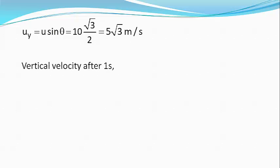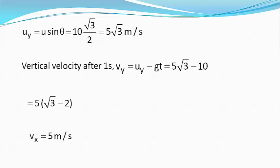The vertical velocity of the particle after 1 second, v_y equals u_y minus g t which equals 5 root 3 minus 10 equals 5(root 3 minus 2) and v_x equals 5 meter per second as there is no acceleration in the x direction.